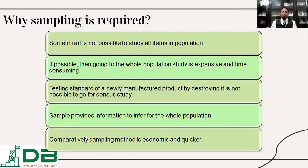Therefore, you have to determine the strength based on a certain number of samples. Sampling provides information to infer for the whole population. Sampling facilitates us to infer the quality or features of the total population.